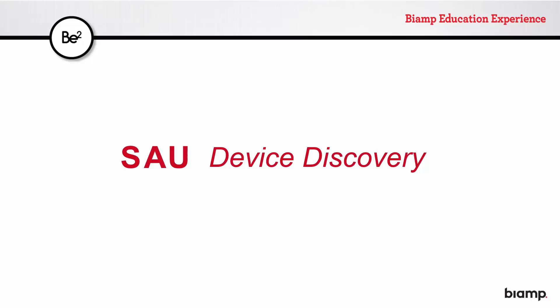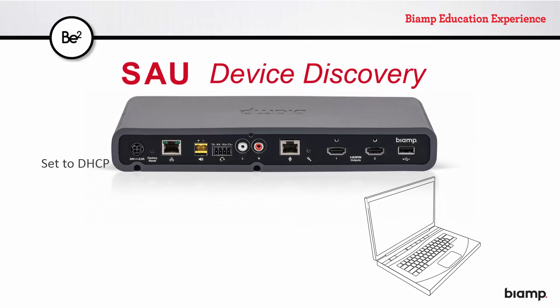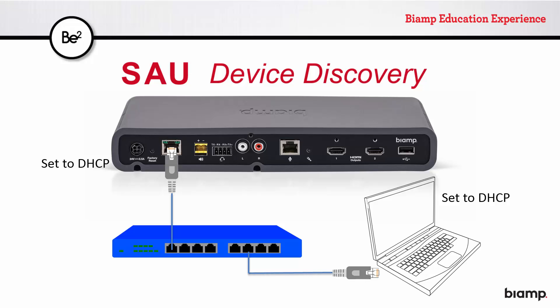In the previous video, we discovered a device with the SAU, and it became available to have its configuration changed. Just how are we connected to that device, making it possible to control it remotely? In this particular case, both the computer running the SAU and the CR1 are set to DHCP and connected to a switch. There is no DHCP server in place here, and as such, they have received link-local addresses and so are able to communicate with each other.